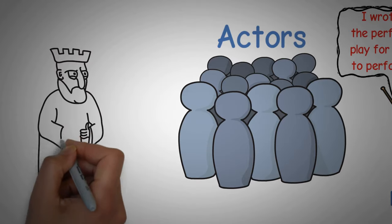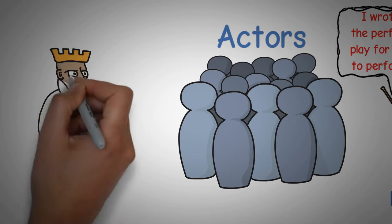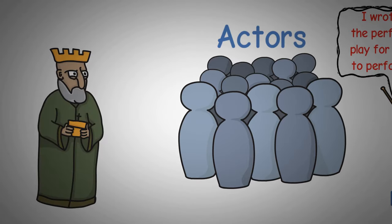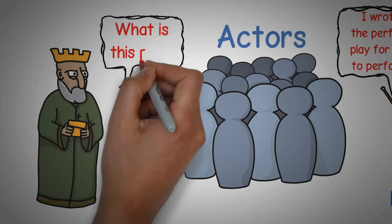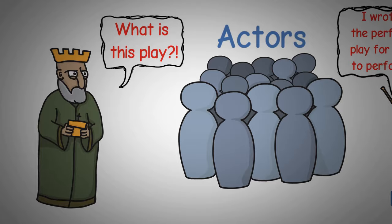Claudius is highly insulted and agitated at the sight of the player king being murdered by having poison poured into his ear. He runs from the room, and when Hamlet sees that, he is convinced that Claudius is guilty.